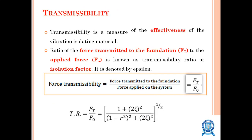Transmissibility is the measure of effectiveness of the vibration isolating material. It is the ratio of force transmitted to the foundation to the force applied on the system, given as ft by f0. The transmission ratio ε equals ft/f0 equals the square root of [(1 plus (2ηr)²) divided by ((1 minus r²)² plus (2ηr)²)].